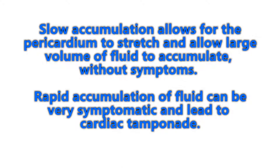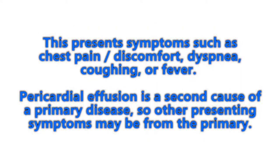Regarding presenting symptoms: patients may be asymptomatic if it was a slow-accumulating effusion, or if it's more rapidly accumulating they may present with chest pain or discomfort, shortness of breath or dyspnea, cough, or fever. Since pericardial effusion is often a secondary cause, you also need to look for a primary disease and other presenting symptoms that may stem from that primary disease.